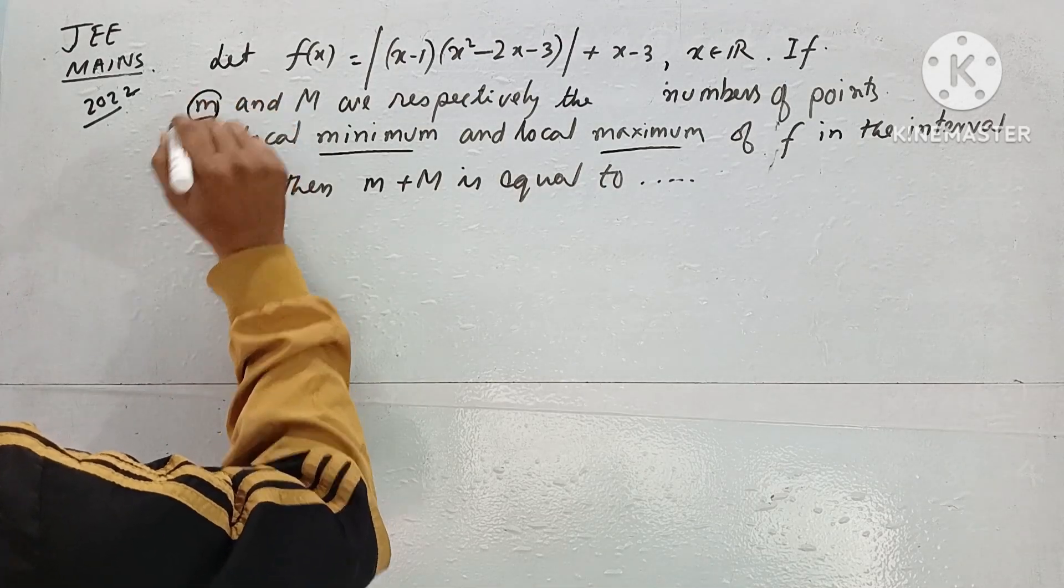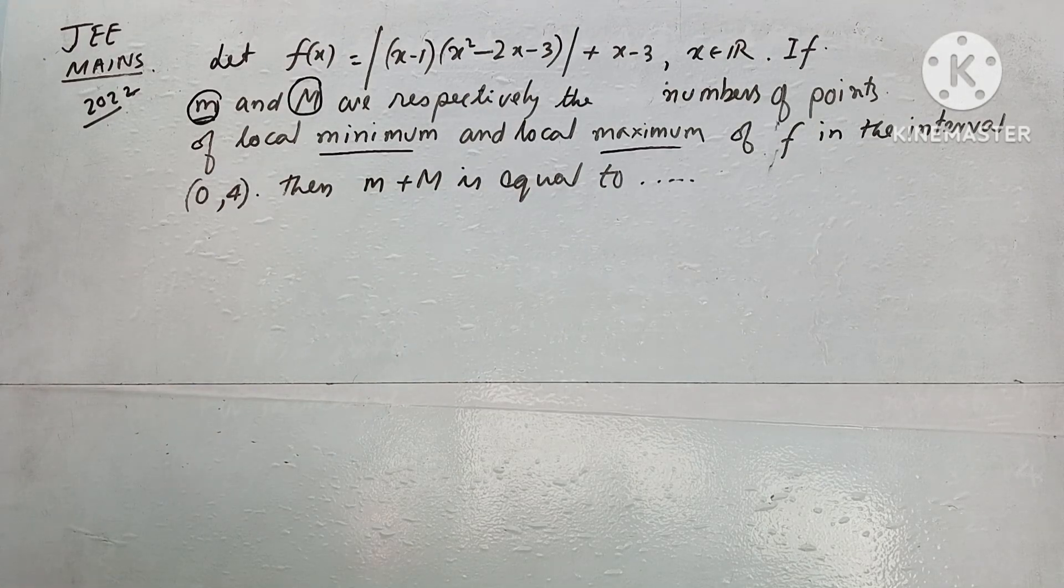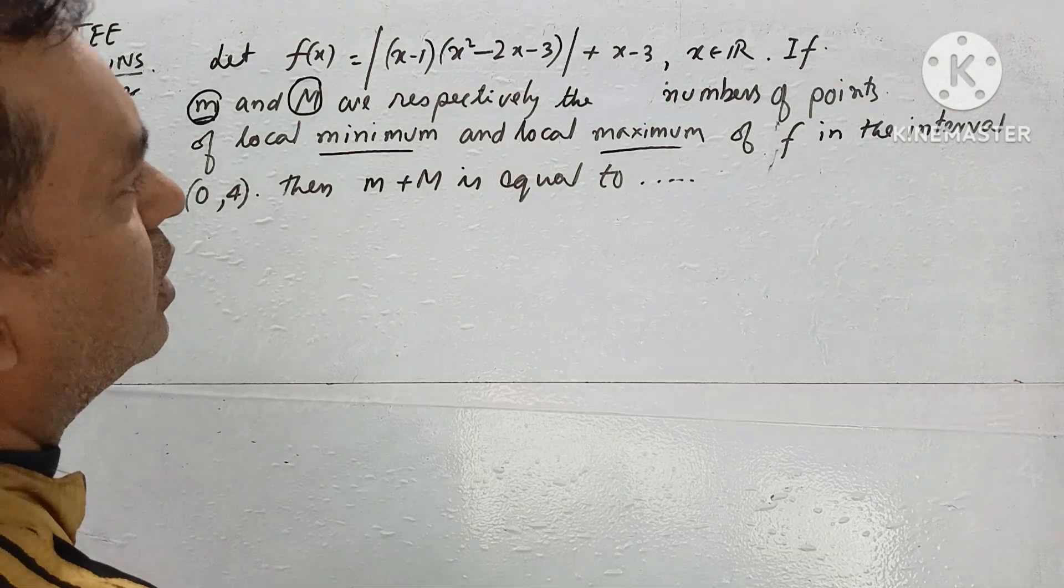So how many local minimums are there and how many local maximums are there? We need to find the value of small m plus capital M.